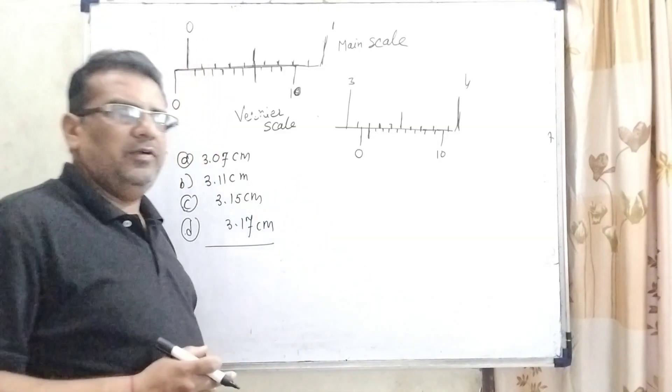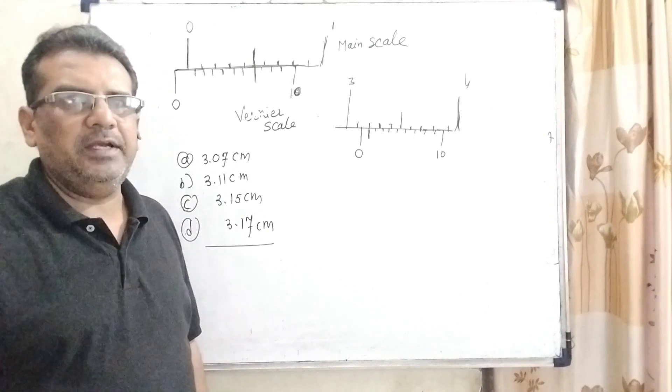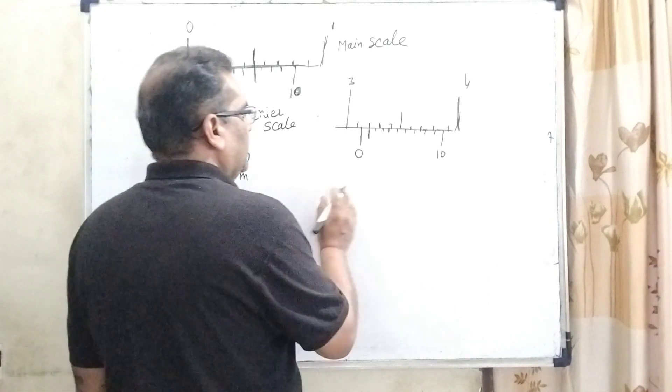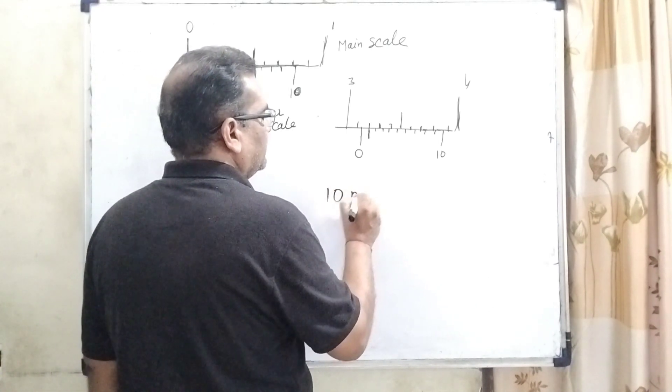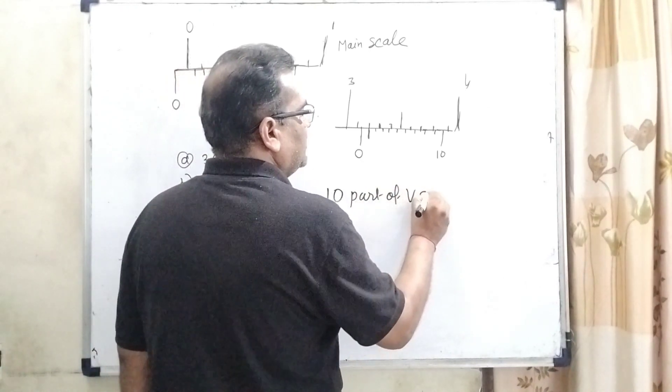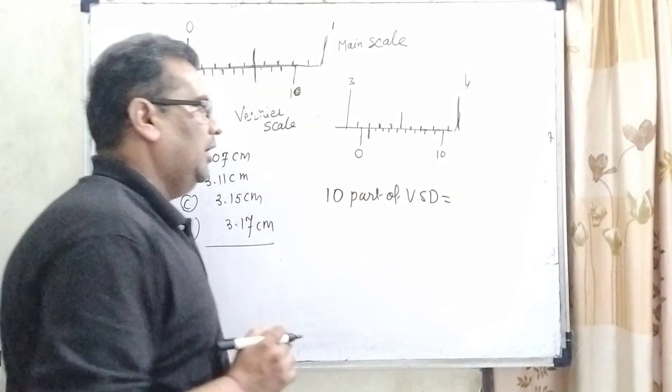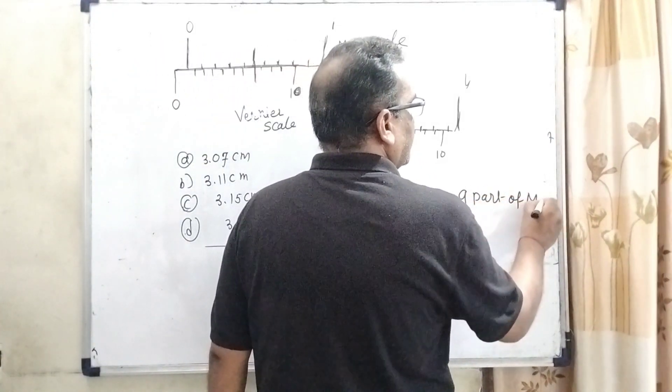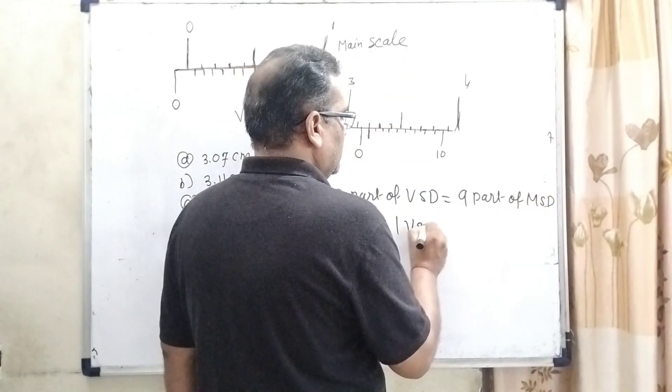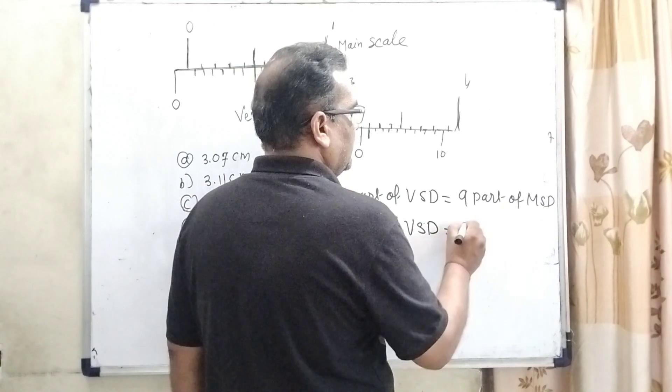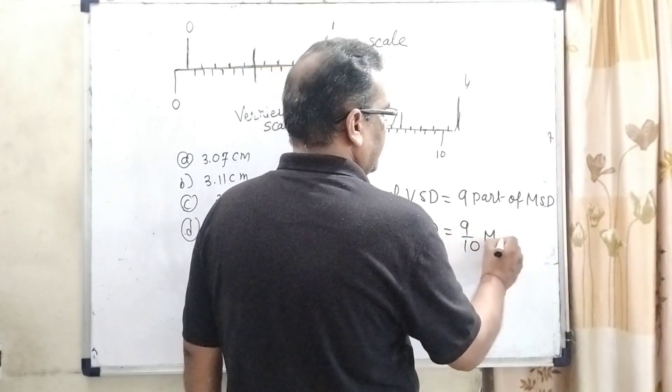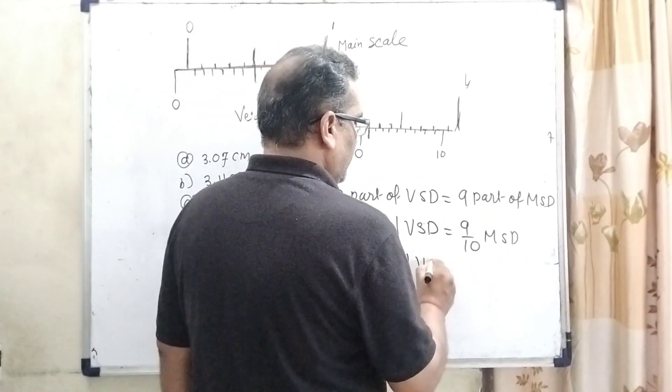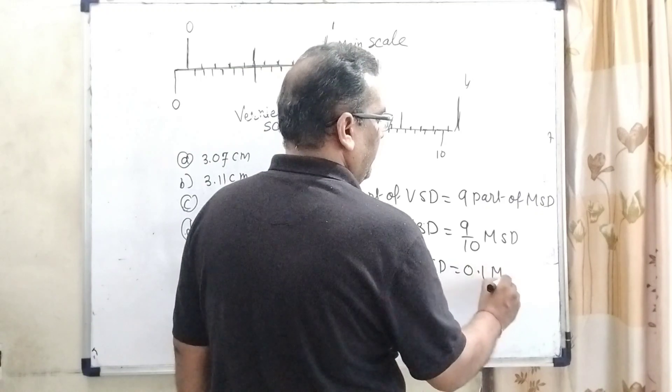Reading with the help of Vernier calipers, we have to find the least count. How can you get the least count? Here we have given that 10 parts of VSD, means Vernier scale division, equals 9 parts of main scale division. So one Vernier scale division is equal to 9 by 10 MSD, means main scale division. So it can be written as 1 VSD equals 0.9 MSD.